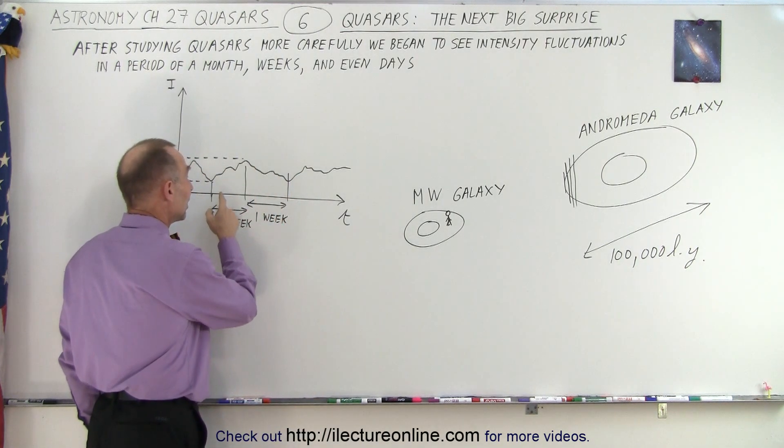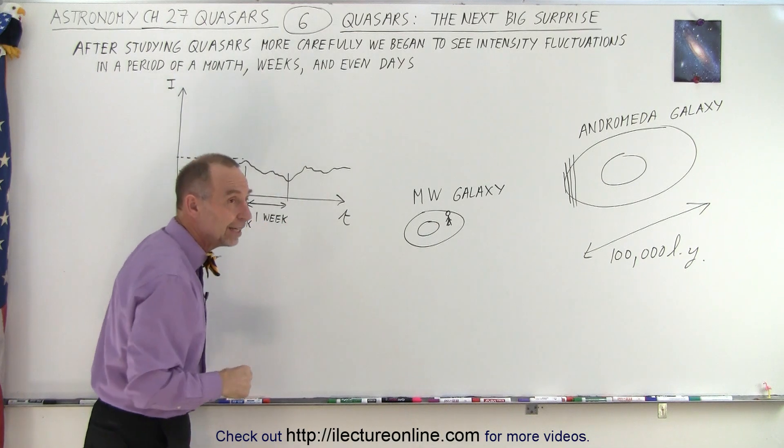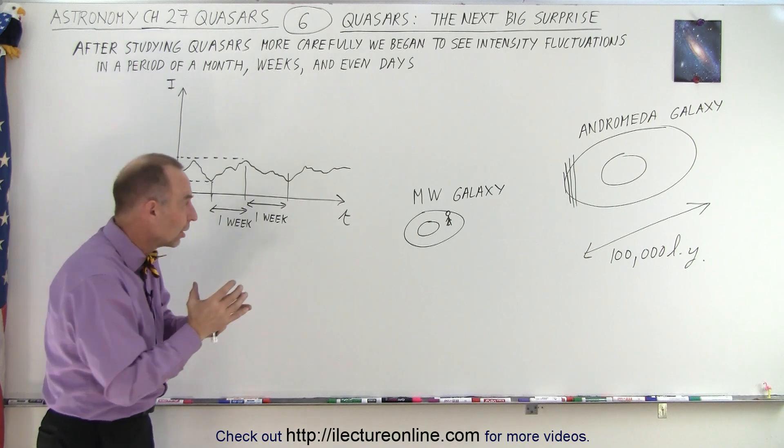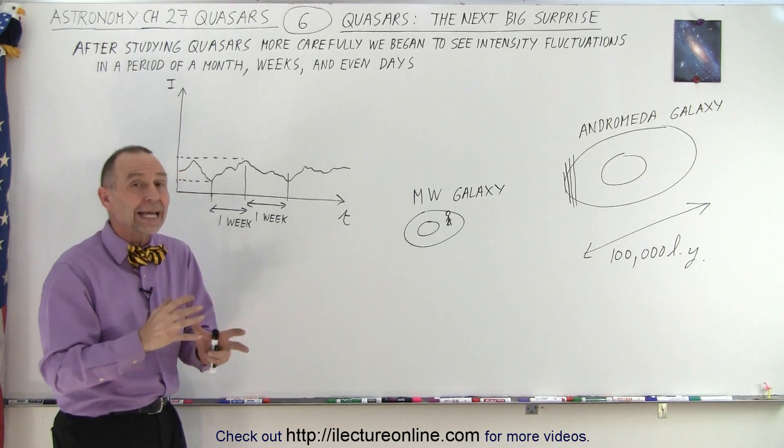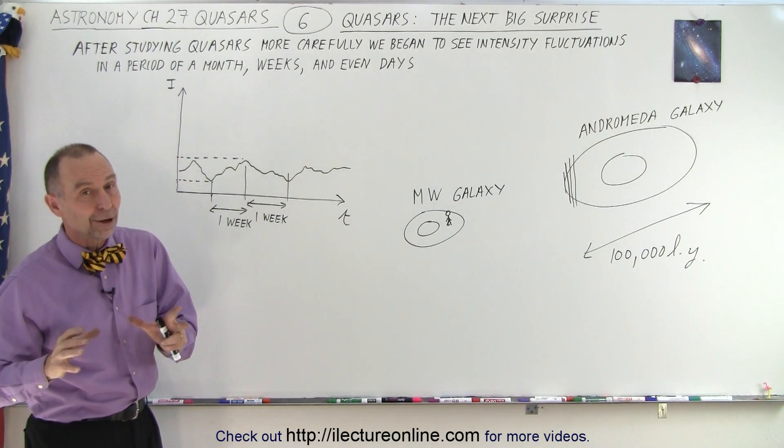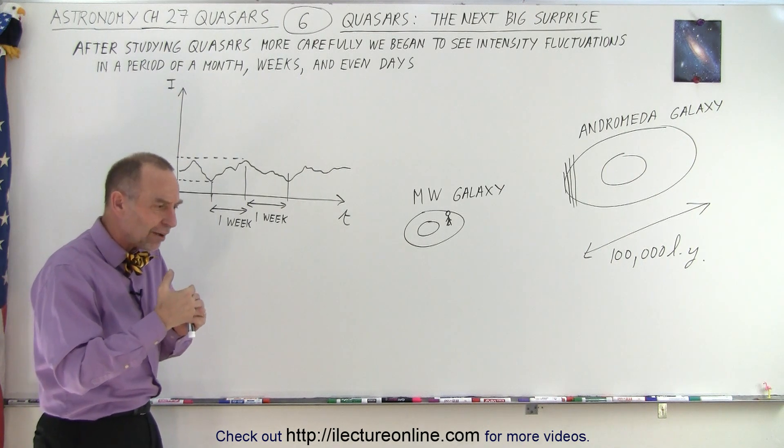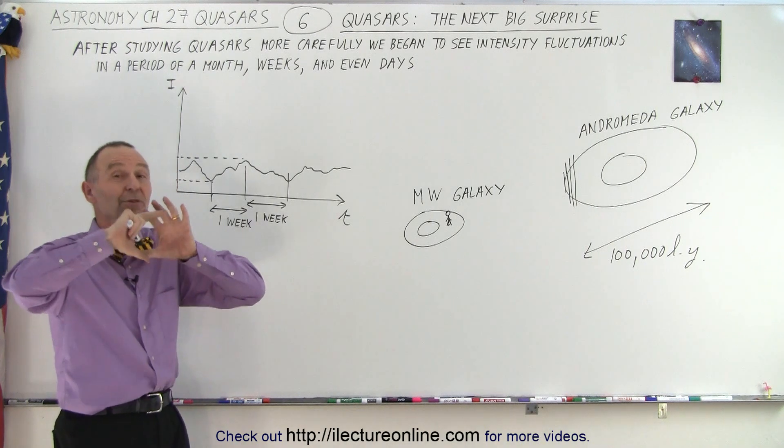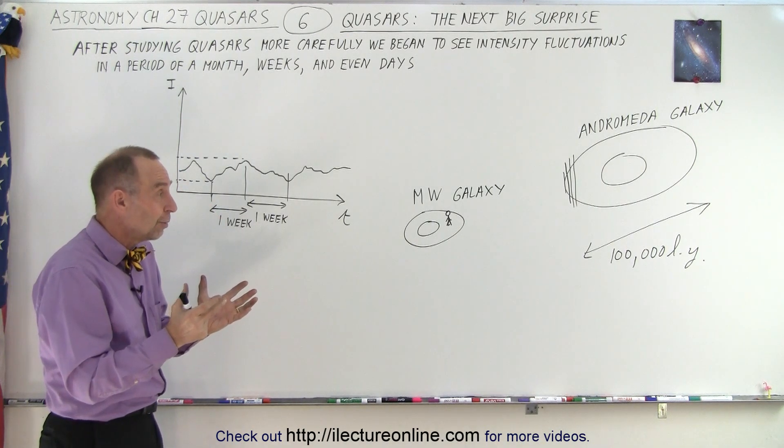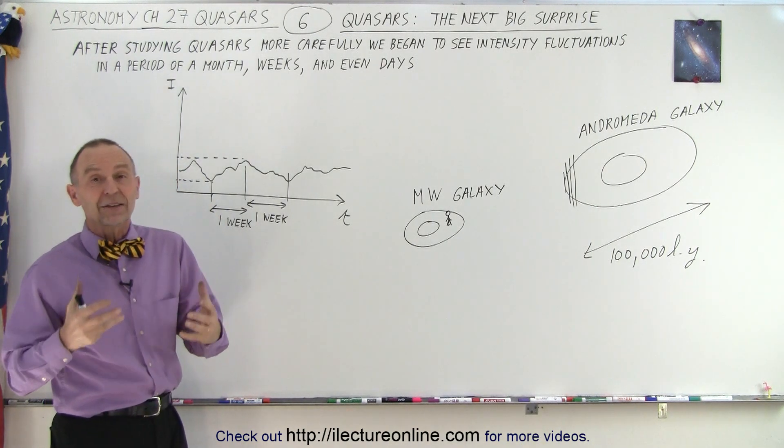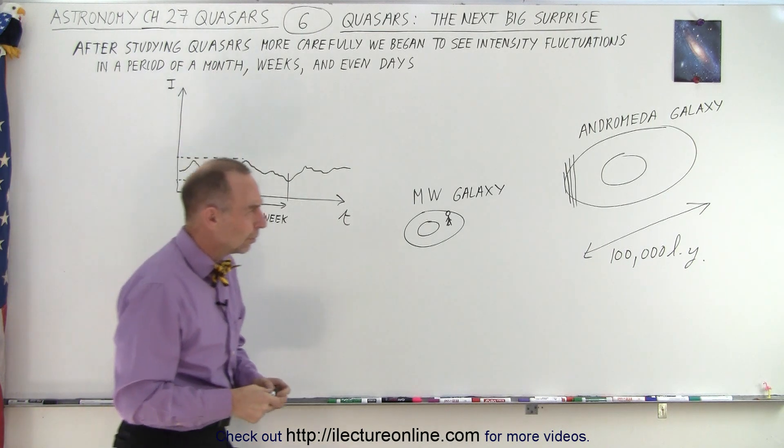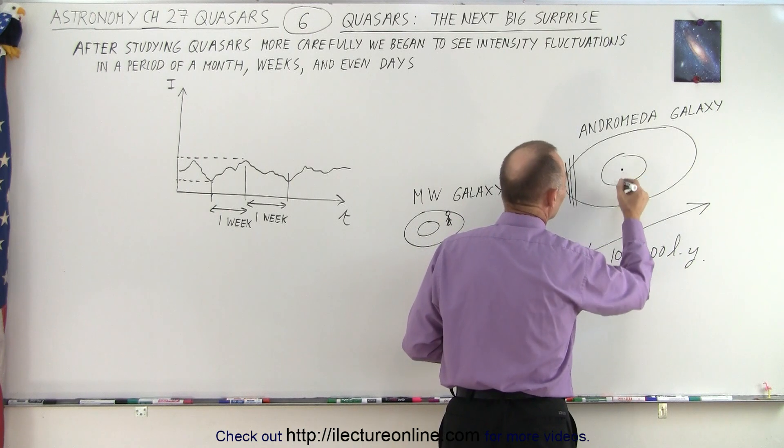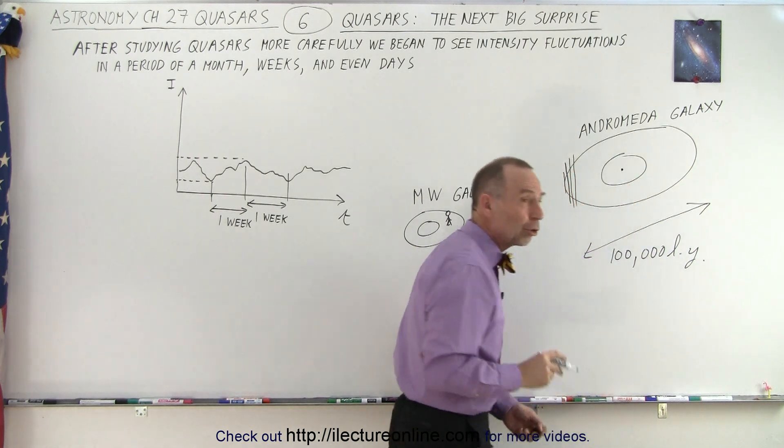Well, it turns out that if we can lose half the intensity in a single week, that means that the size of where that energy is coming from cannot be any bigger than a light week. Not a light year, but a light week, the distance that light travels in a week. So we're beginning to realize that the object from which this enormous amount of energy is coming from must be basically the size of a solar system.